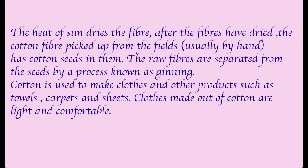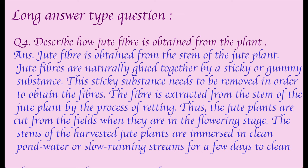Question four: Describe how jute fiber is obtained from the plant. Jute fiber is obtained from the stem of the jute plant. Jute fibers are naturally glued together by a sticky or gummy substance that must be removed to obtain the fibers. The fiber is extracted by the process of retting. The jute plants are cut from the fields when they are in the flowering stage.